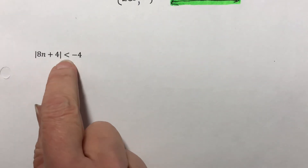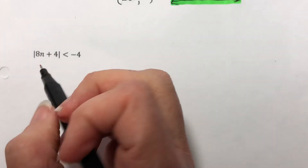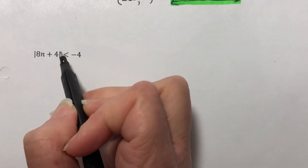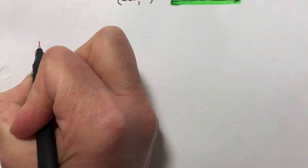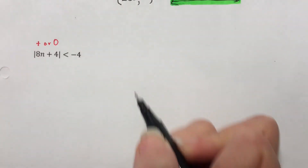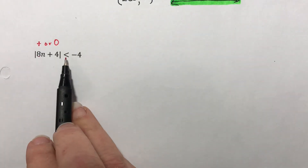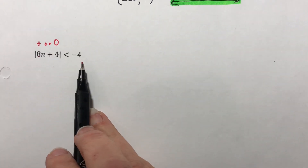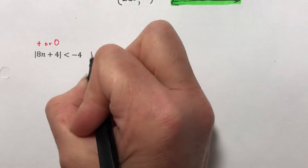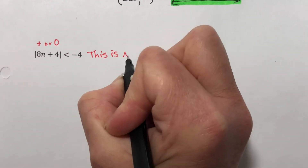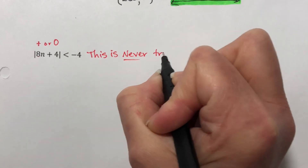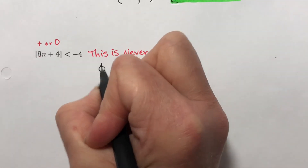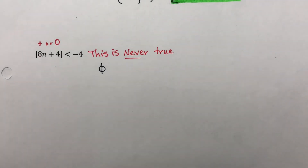Remember, no matter what number I plug in, I multiply by 8, add 4, and take the absolute value. Absolute values always give you a positive number or 0. When is a positive number less than negative 4? Never. When is 0 less than negative 4? Never. This is never true, so we say our answer is no solution, and we use the empty set symbol for that. Okay, this is the end of 2.3. Bye-bye.